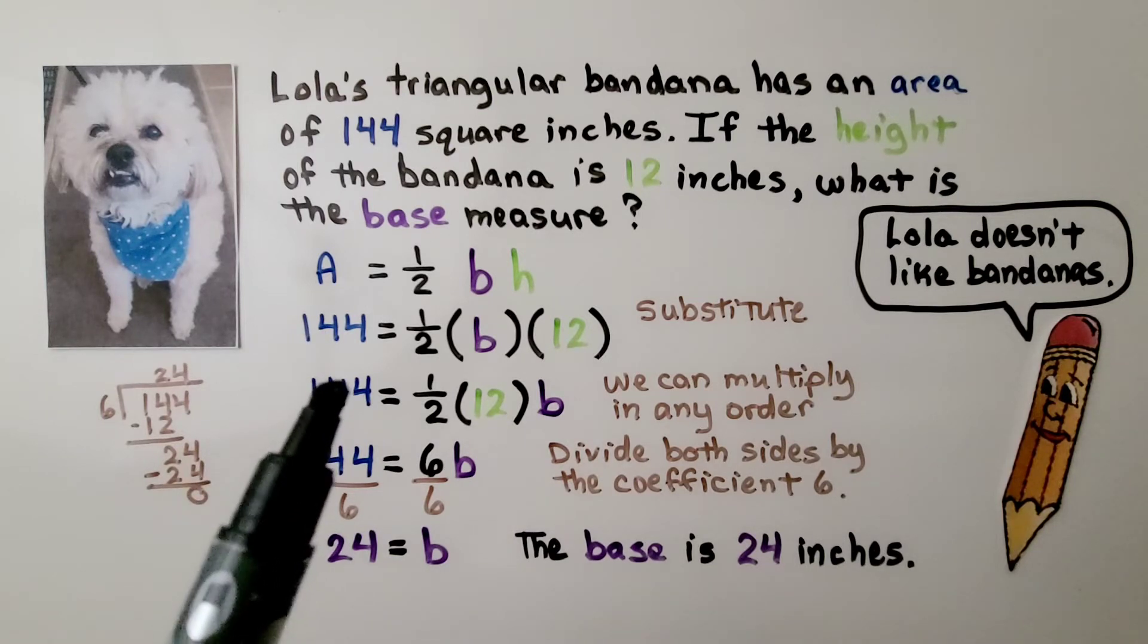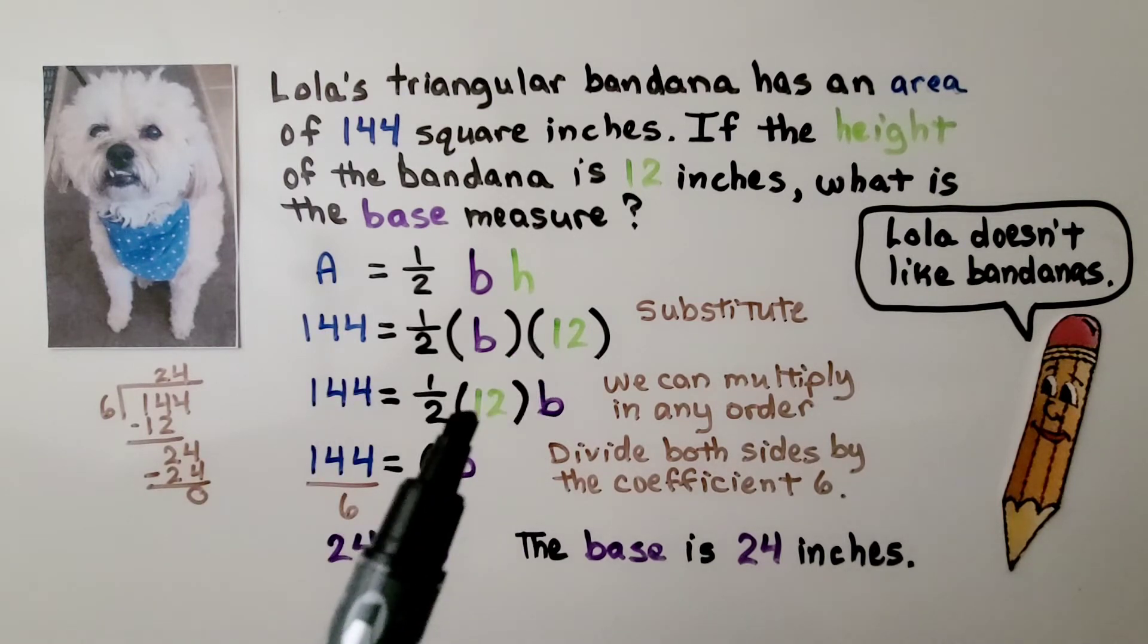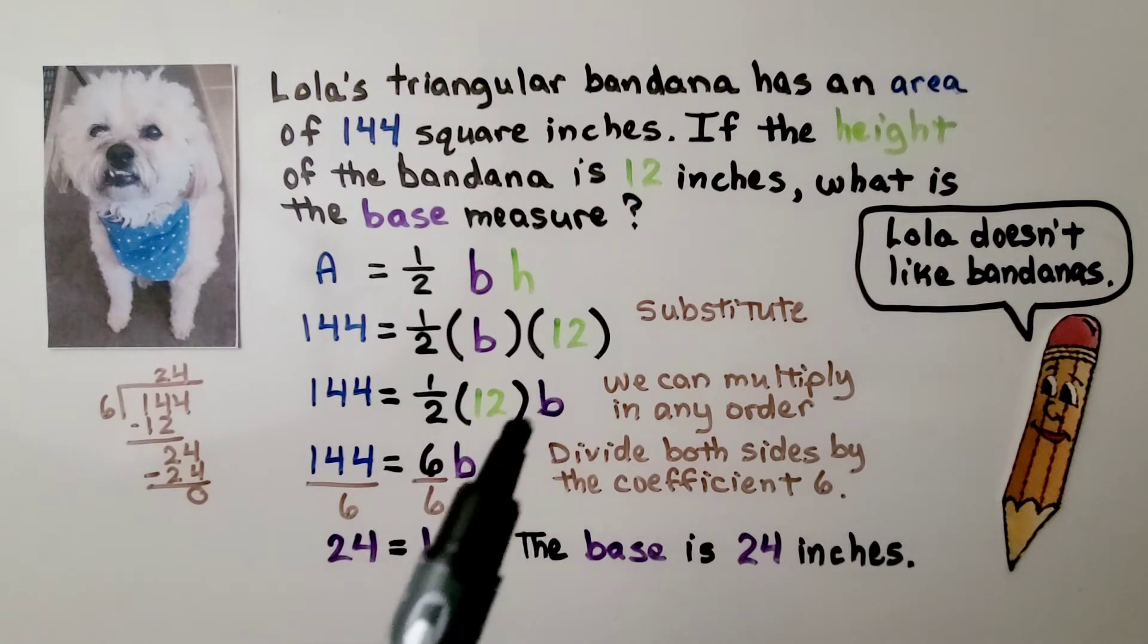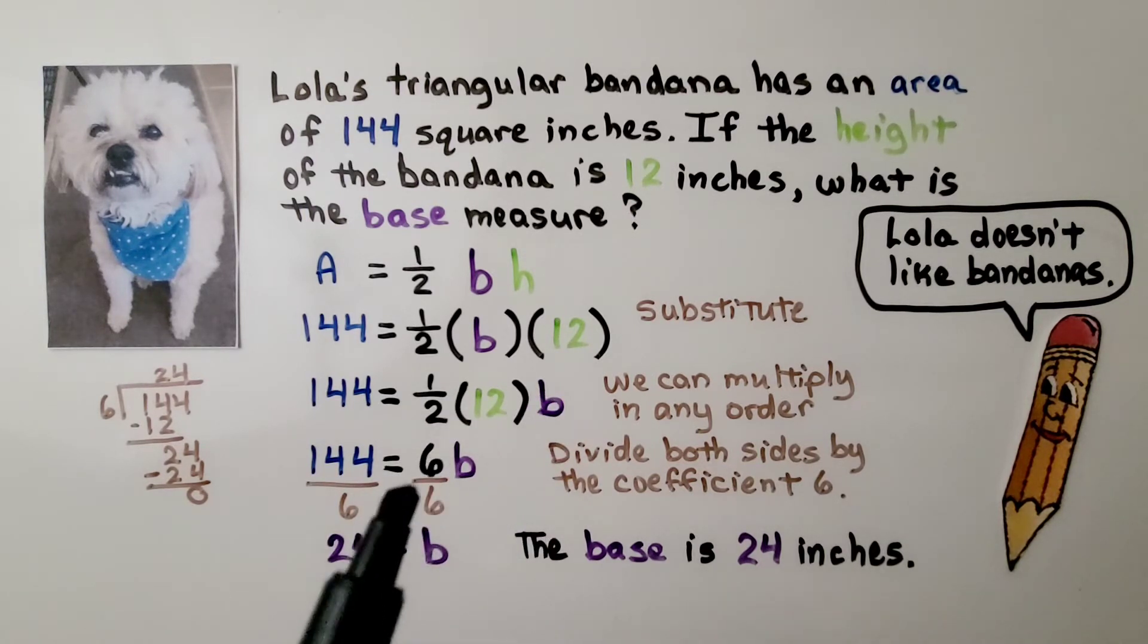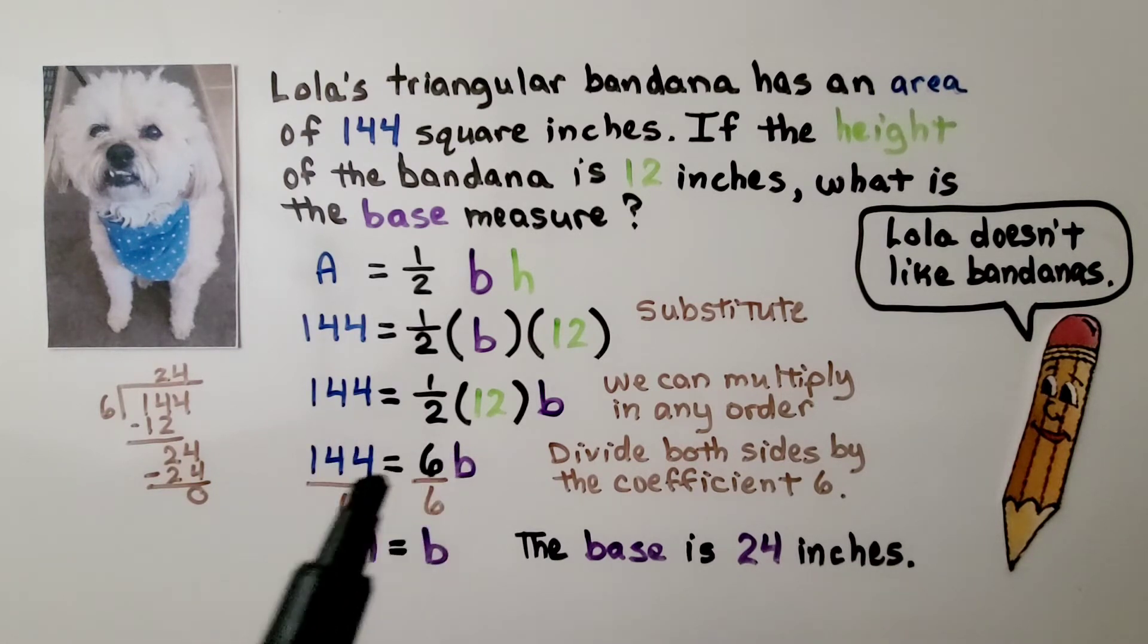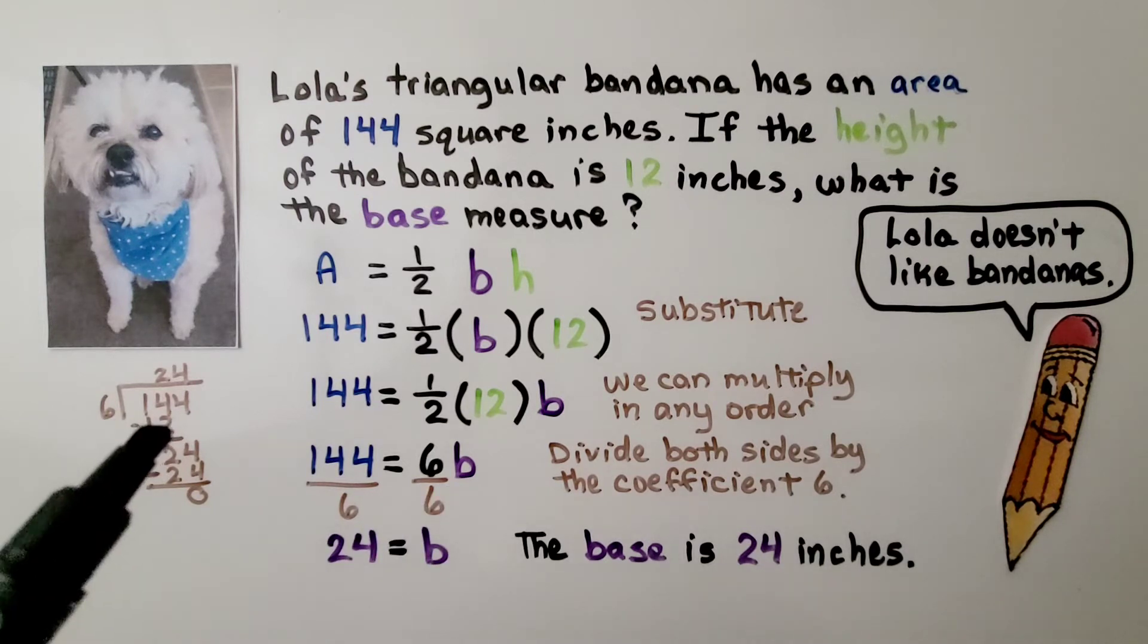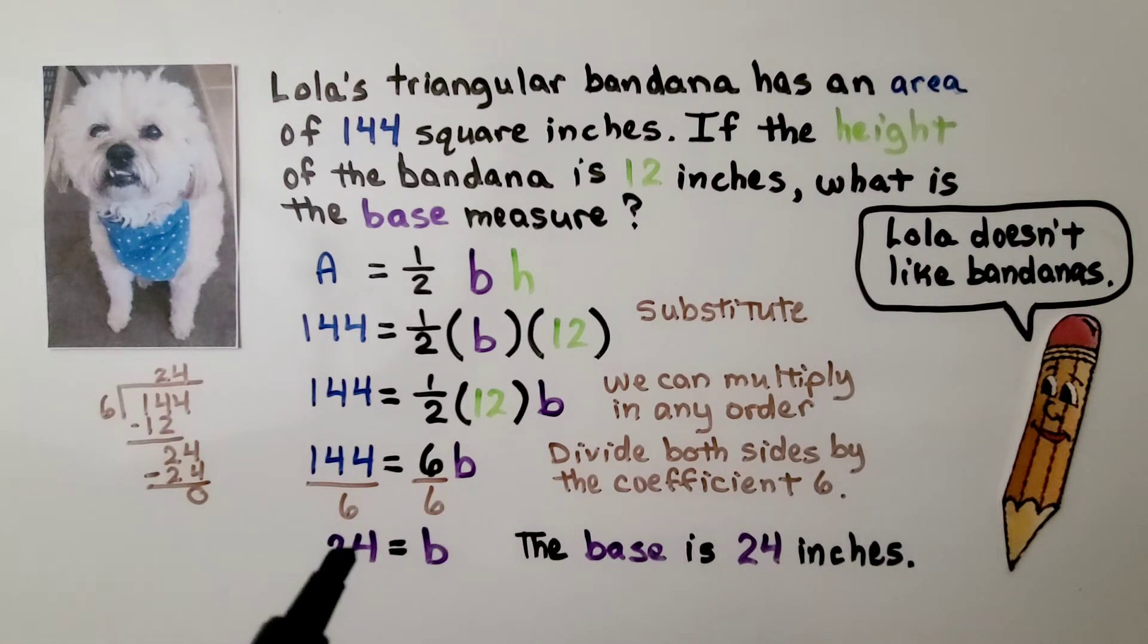And we can multiply in any order. So we can move the 12 over here and multiply that by half or divide it by 2 to get a 6. We have 6b. Now we have 6 as our coefficient. We divide both sides of the equation by the coefficient 6. And 144 divided by 6 is 24. We know the base is 24 inches.